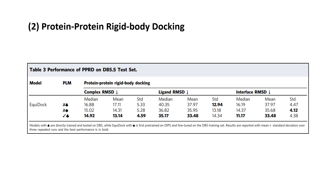Next, protein-protein rigid body docking involves the prediction of the 3D structure of a protein-protein complex from the individual unbound structures. This assumes that no protein conformation change happened during the binding process and the receptor protein is fixed during evaluation. The complex ligand and interface RMSD decrease a bit when we use the protein language model with Equidoc. It is interesting to see that a DIPS pre-trained Equidoc model still performs worse than the original Equidoc model while being equipped with the pre-trained protein language model, demonstrating that structural pre-training for GNNs might not benefit graph neural networks more than using a pre-trained protein language model.